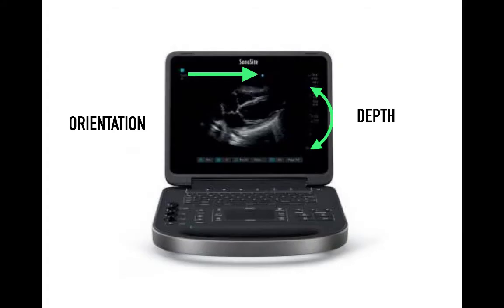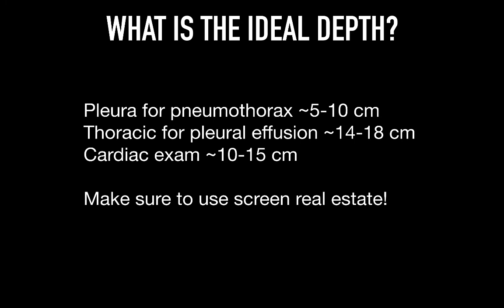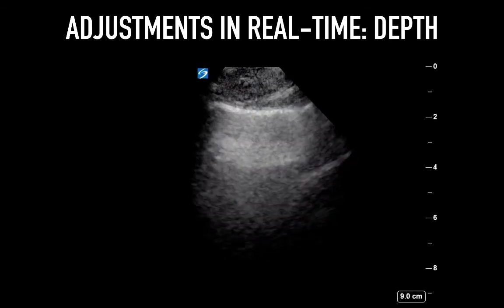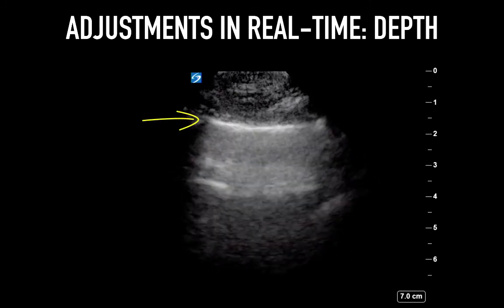On the Edge screen, depth is displayed on screen right and the marker is displayed at the top by a blue dot. On the Xport, orientation with the screen marker and depth are manually adjusted on screen right. Ideal depth really depends on what you're looking at — optimize your screen real estate. For pleural pneumothorax, 5 to 10 centimeters; thoracic space for pleural effusions, 14 to 18 centimeters; cardiac exam, 10 to 15 centimeters. Here is a real-time adjustment starting at 15 centimeters where reducing depth results in much better visualization of the pleural line.